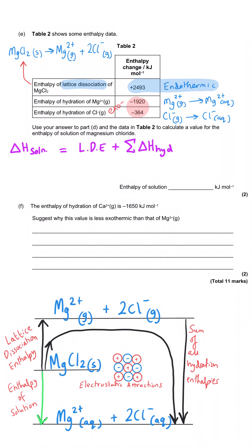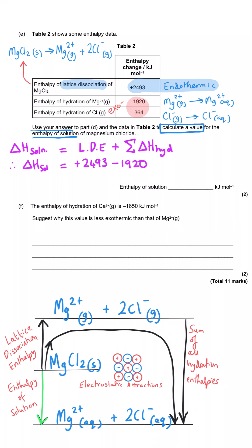For Part E, using the equation from Part D, we calculate the enthalpy of solution of magnesium chloride. We take the lattice dissociation enthalpy of +2493, add the hydration enthalpy of Mg²⁺ of −1920, and add two lots of the hydration enthalpy of Cl⁻ (−364 × 2). This gives an enthalpy of solution of −155 kJ mol⁻¹. If you forgot to multiply the chloride hydration by 2 you would still receive one of the two marks.